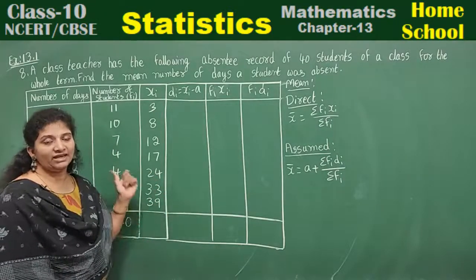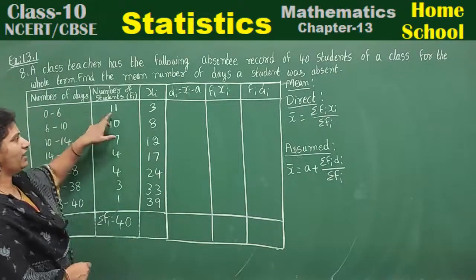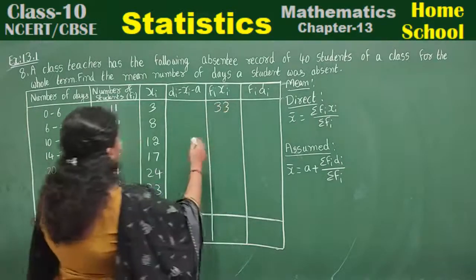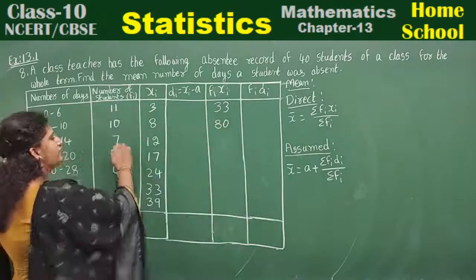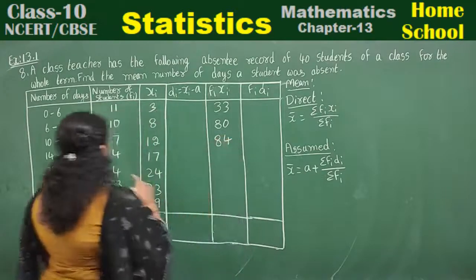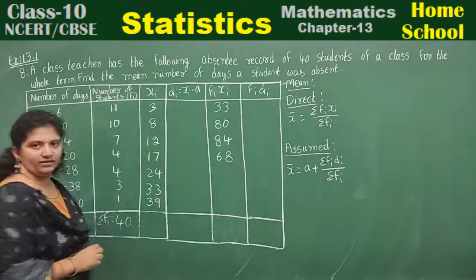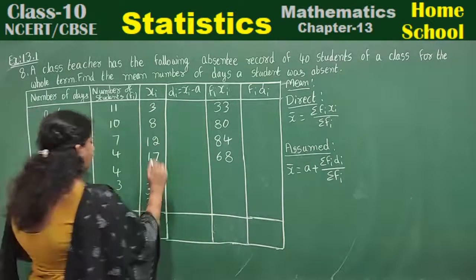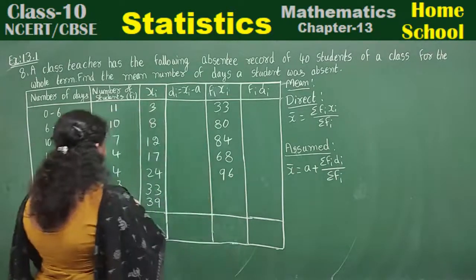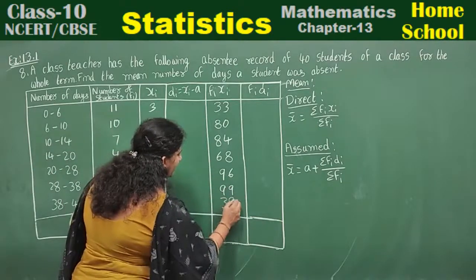Let's apply the direct method. We need fi and xi, then multiply fi times xi. 11 times 3 is 33. 10 times 8 is 80. 7 times 12 is 84. 4 times 17 is 68. 4 times 24 is 96. 3 times 33 is 99. 1 times 39 is 39.